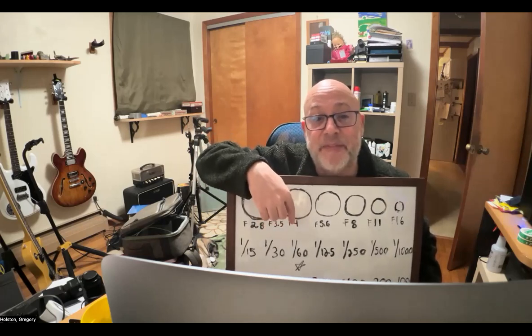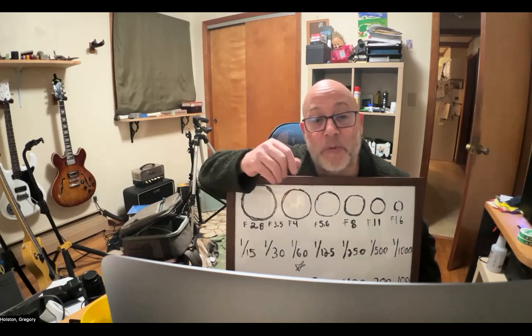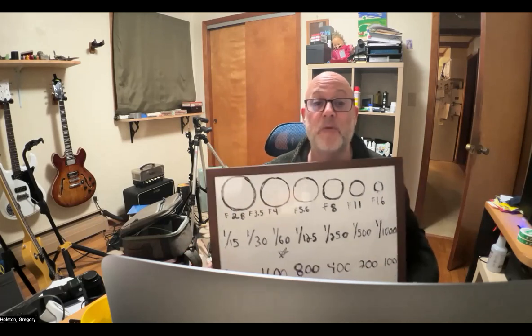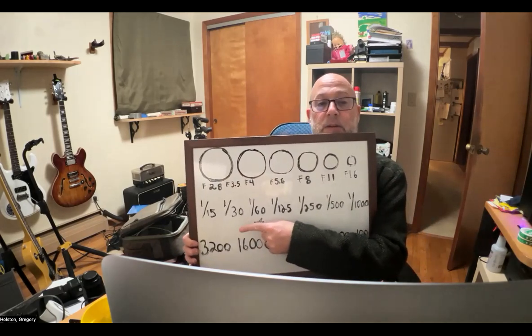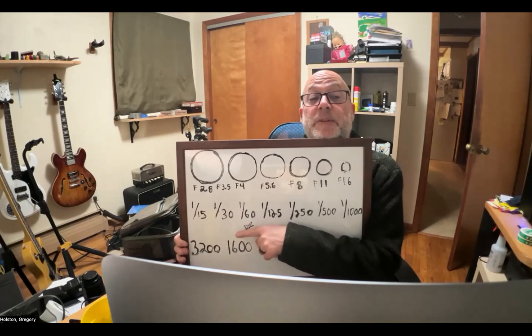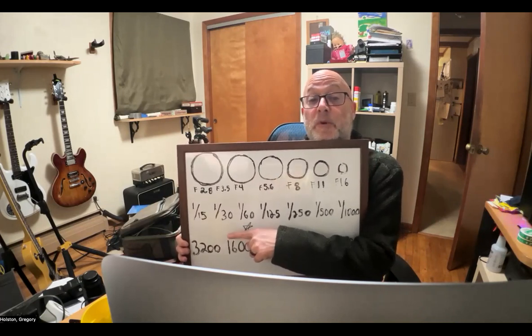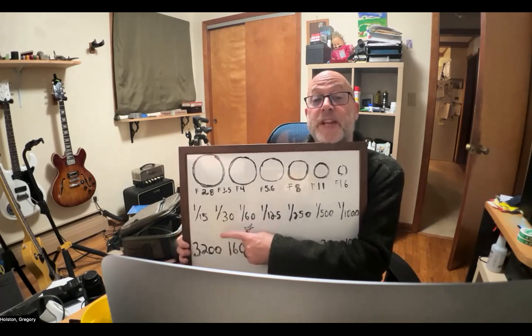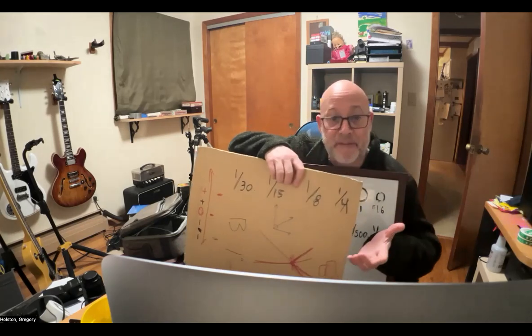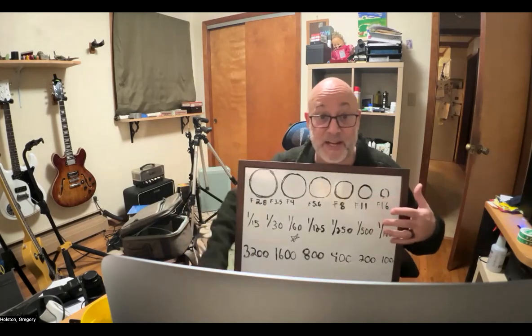A 1/60th is generally considered the safe zone for hand-holding without a tripod and getting a photo without blur. With this project, I want you shooting everything at 1/60th or longer — preferably all of them longer. I'm talking 1/30th, 1/15th, 1/8th, 1/4, 1/2, one second if you want to try. This is going to be very experimental, but there's a catch: the balance of the exposure triangle comes into play.